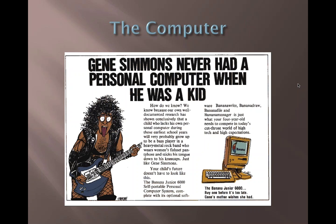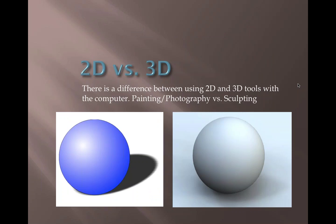Both images on the screen — the blue sphere and the white sphere — are computer graphics created with the computer. The difference is 2D versus 3D. 2D is like painting or photography: you're working on a flat surface. The blue side uses a sphere on a white background with a light gray sphere at an angle to give the illusion of shadow. Programs like photo paint or CorelDRAW are used for creating those 2D images. Working with 3D tools is like sculpting — you start with a mass and whittle it away, or combine different shapes.